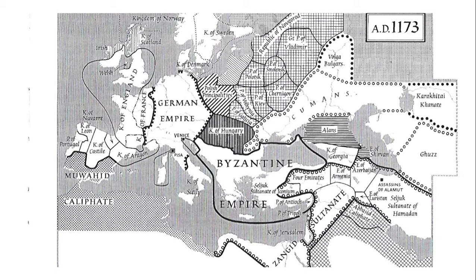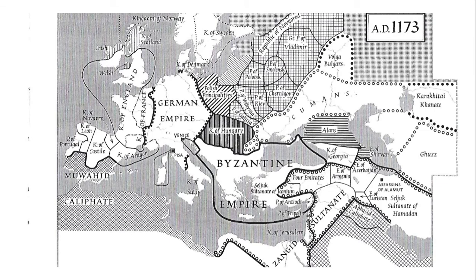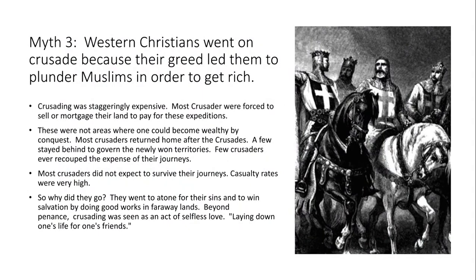Looking at the map just before the Third Crusade, the Christian gains were a very small slice — the remnants of Antioch, Tripoli, and the Kingdom of Jerusalem, with Edessa already lost. The Muslim world still stretched from Spain to India. This was not a massive military success that conquered enormous Muslim territory — quite the opposite; the Christian foothold was extremely limited.